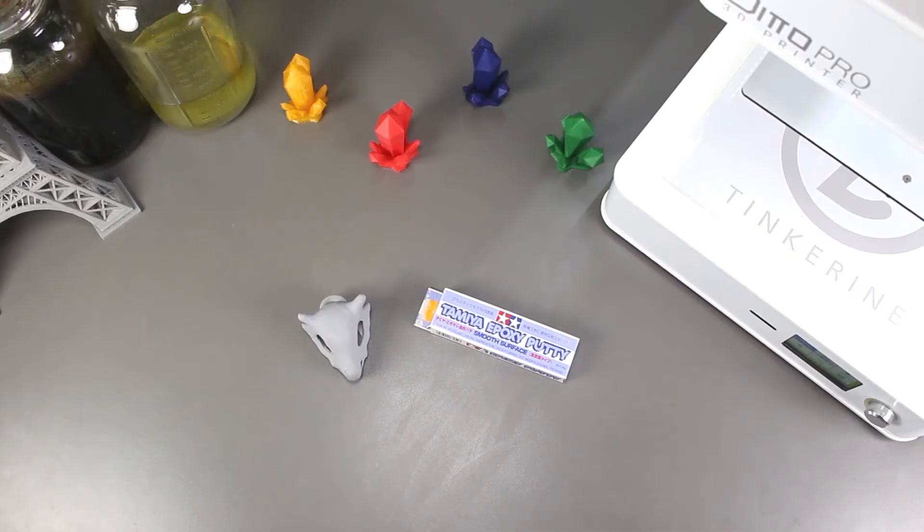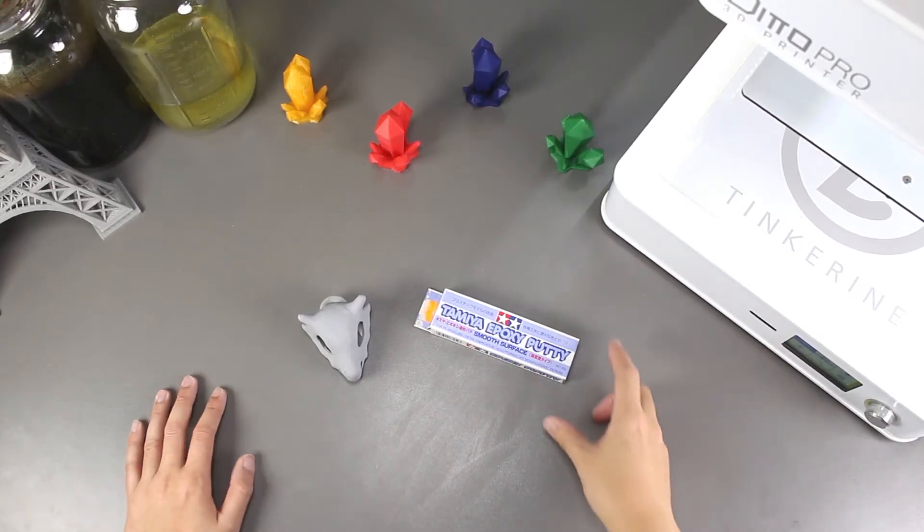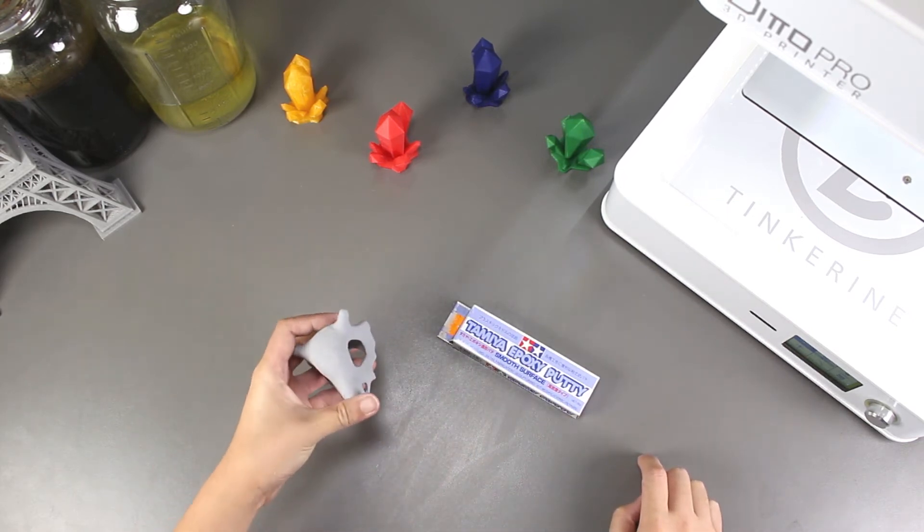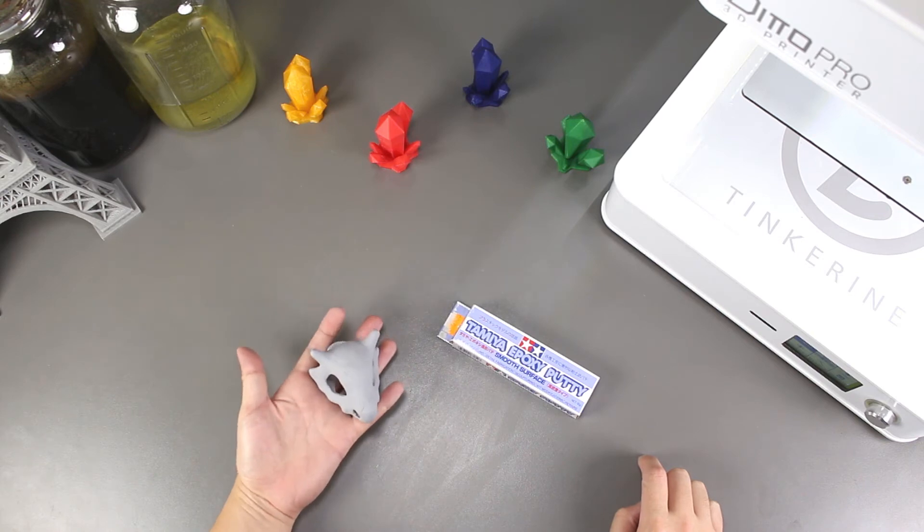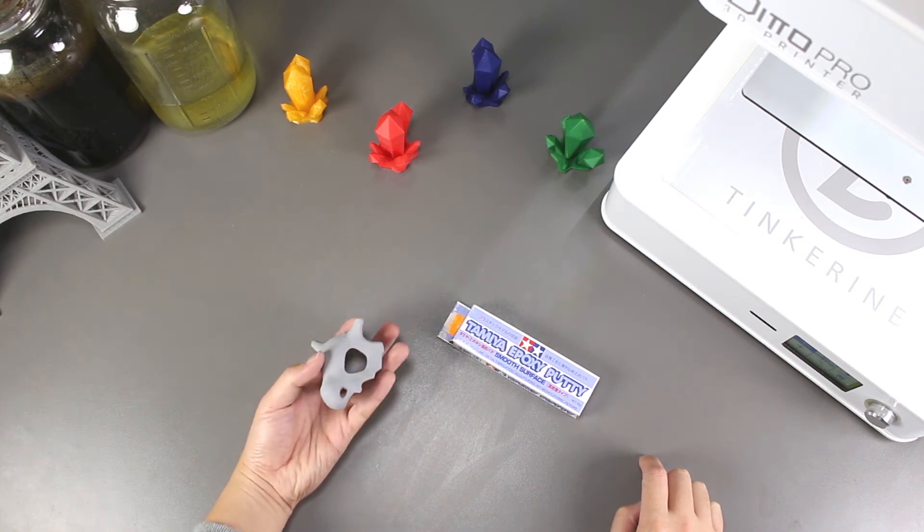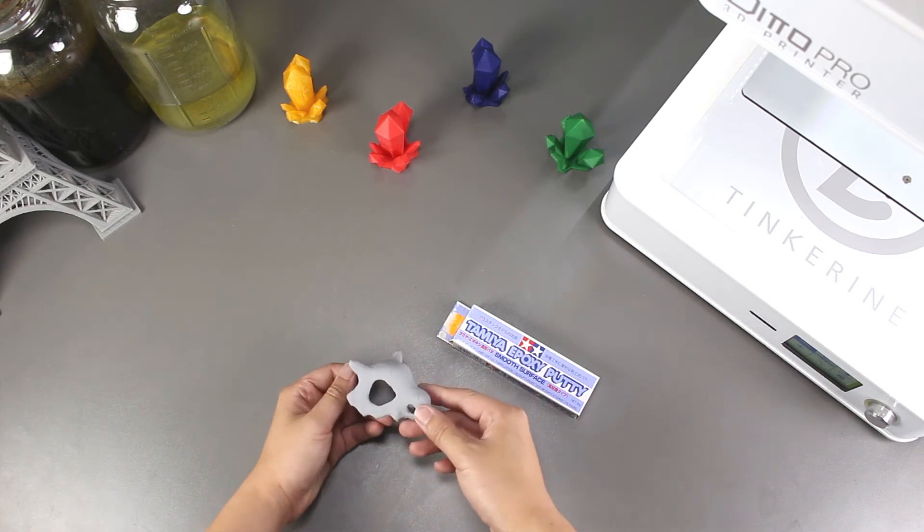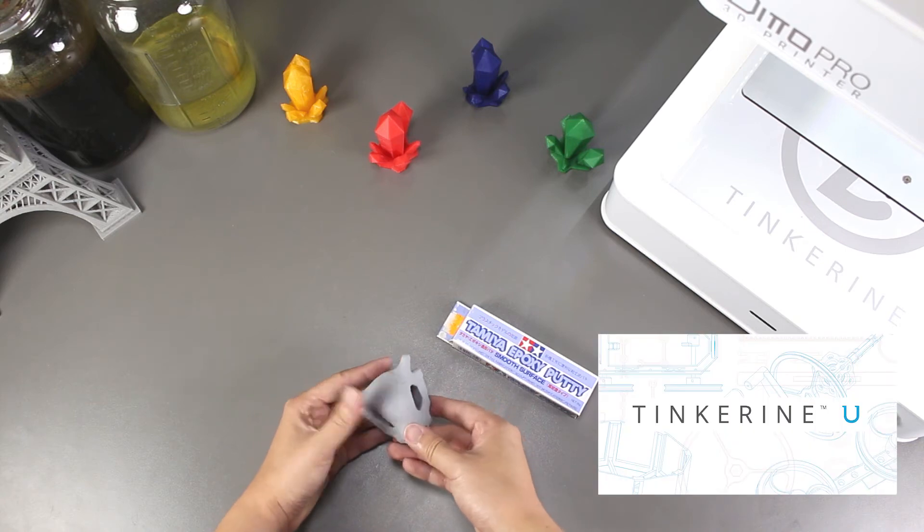Well, there we have it. We tried using epoxy putty with our model and I would say it works pretty well. With a very thin layer, we were able to cover up the model really quick, hence smoothing it and then also allowing us to add in some minor details. So overall, I would say that epoxy putty is pretty good with PLA.